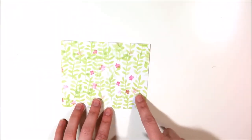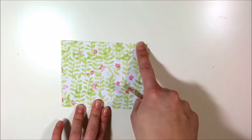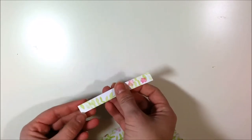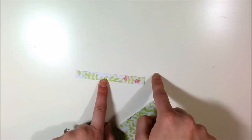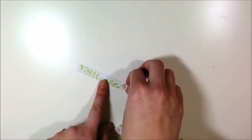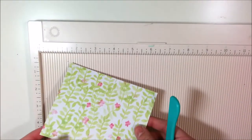So you start with a piece of cardstock. This one measures 5 inches by 4 inches. And then also cut yourself a strip. This is for the handle of the basket. This is 4 inches by half an inch.